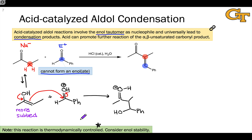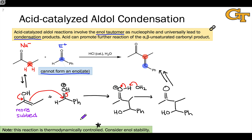Use of the conjugate base of the acid catalyst — here H₂O — as a base regenerates H₃O⁺ and gives us a neutral aldol addition product. Now, under the reaction conditions with acid catalyst present, this will spontaneously eliminate water to form the alpha-beta unsaturated carbonyl product.